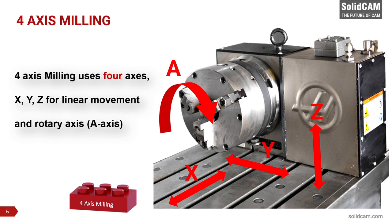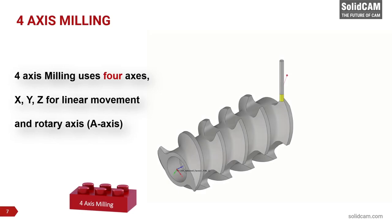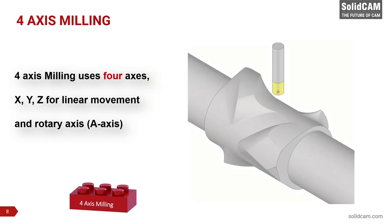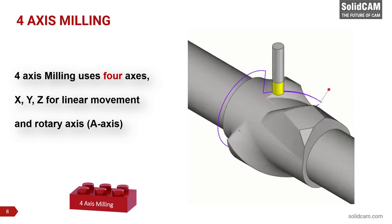By clamping the workpiece only once, machine downtime is eliminated and greater part accuracy is achieved. This is especially true for indexial operations, but simplification and efficiency are not the only benefits. Sufficient part accuracy cannot be achieved if the workpiece requires different clamping in multiple setups, often causing misaligned through-holes and deviations in surface relationships. Shapes such as worms, cams, and similar complex shapes simply require a rotary axis to be machined correctly.